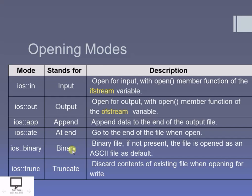Another mode is the binary mode. If I want to open a binary file, I open it in binary mode. If the file is not opened in binary mode, by default it opens as an ASCII file. The truncate mode stands for truncate, which discards the content of the existing file when you open it for writing purpose. These are the different opening modes, and according to your purpose and requirements you need to choose the correct mode to provide as the second parameter to the open function.